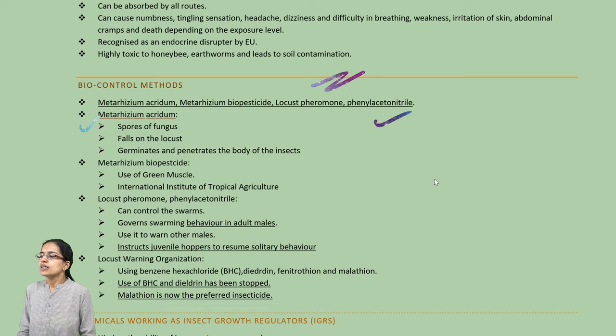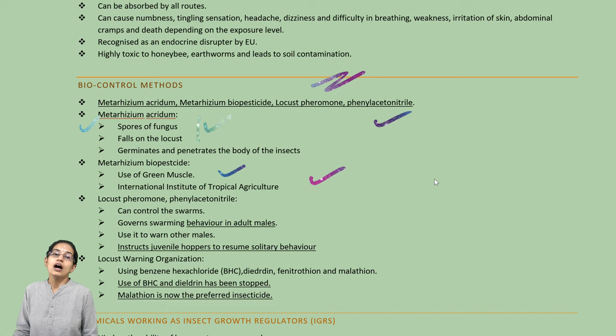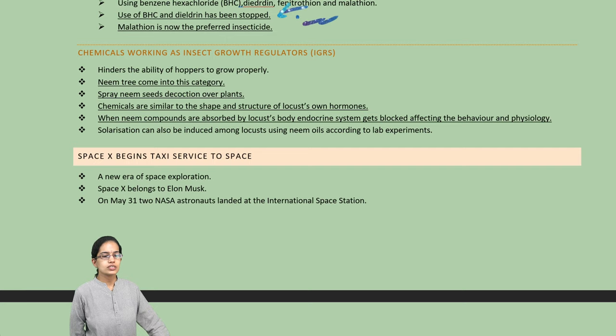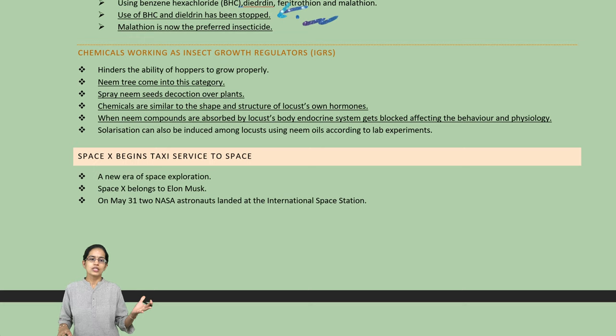The next is Metarhizium acridum, where you have spores of fungus that penetrate into the body of insects. There is another biopesticide which has been declared by the International Institute for Tropical Agriculture. BHC and dieldrin usage has been stopped by the Locust Warning Center as they are highly harmful. Neem is also used as an alternative — spraying neem over plants creates a protective layer with chemicals similar to the locust's own hormones, blocking the endocrine system and bringing a change in physiology.